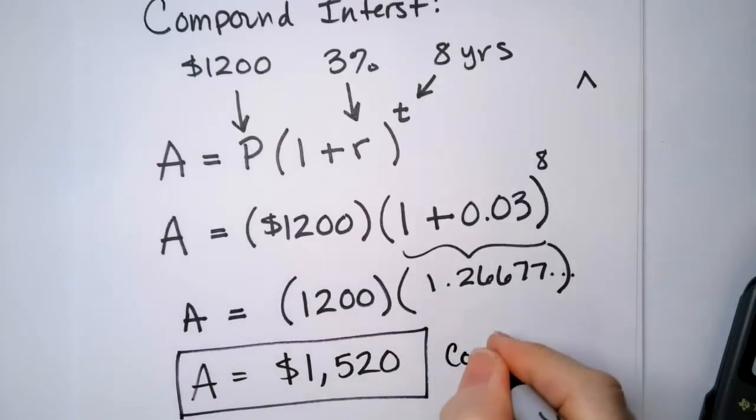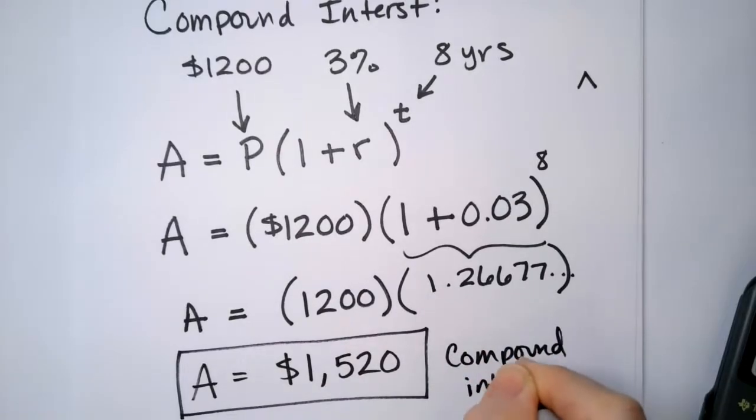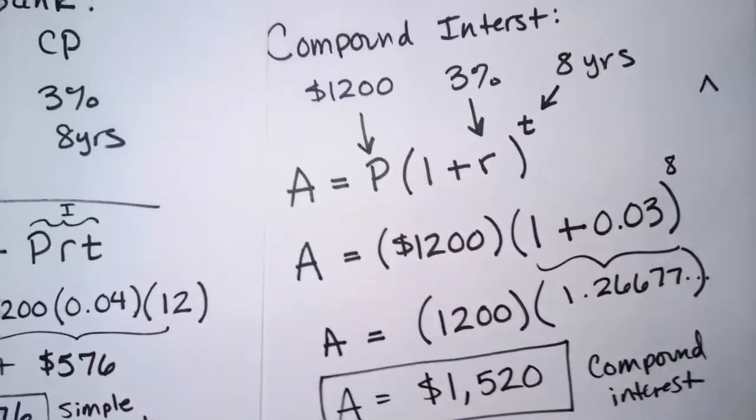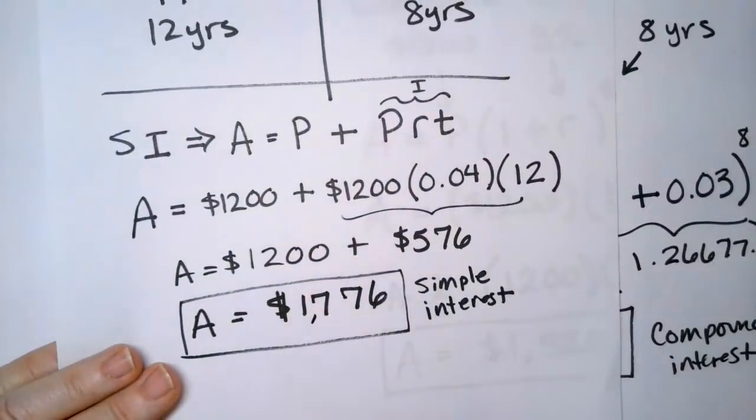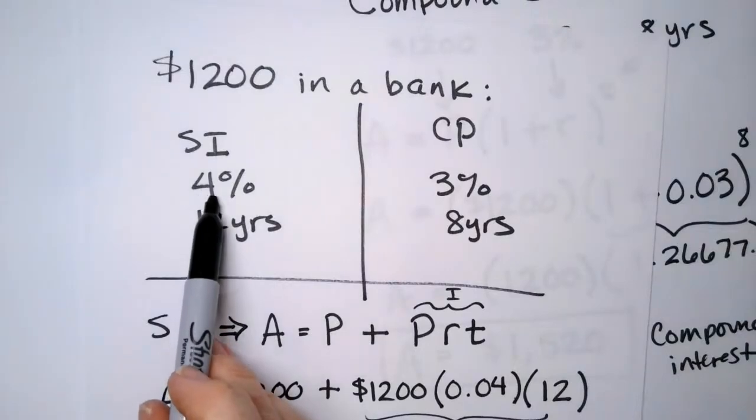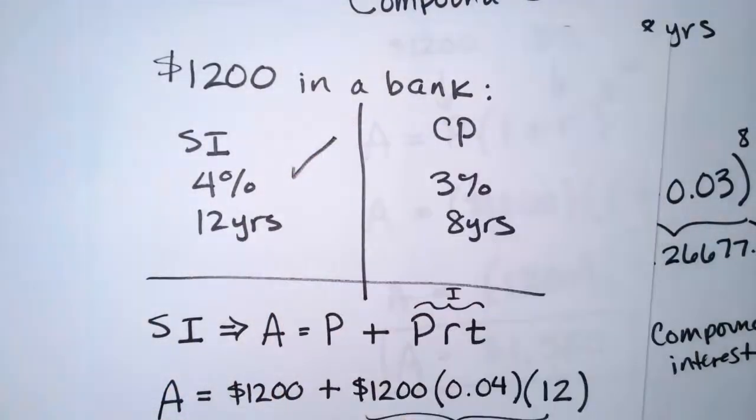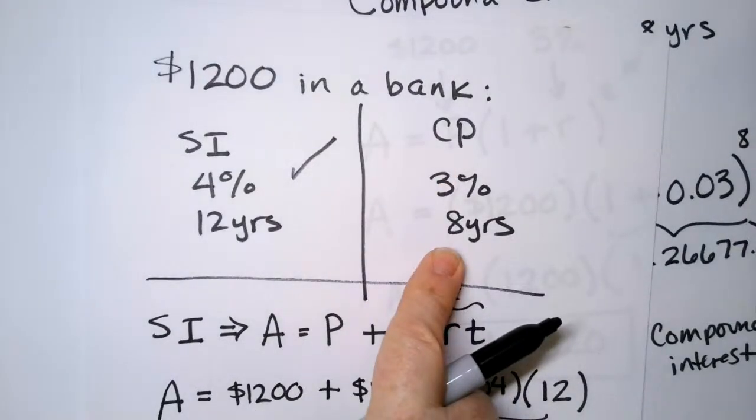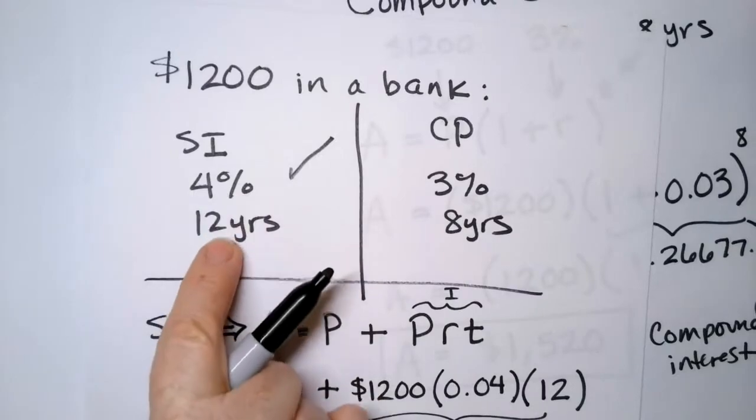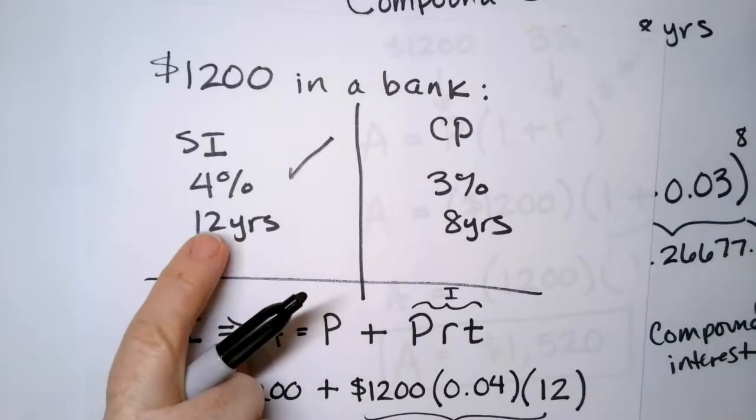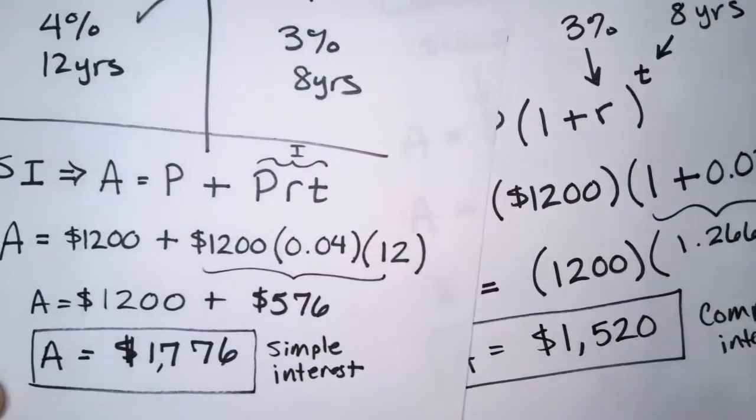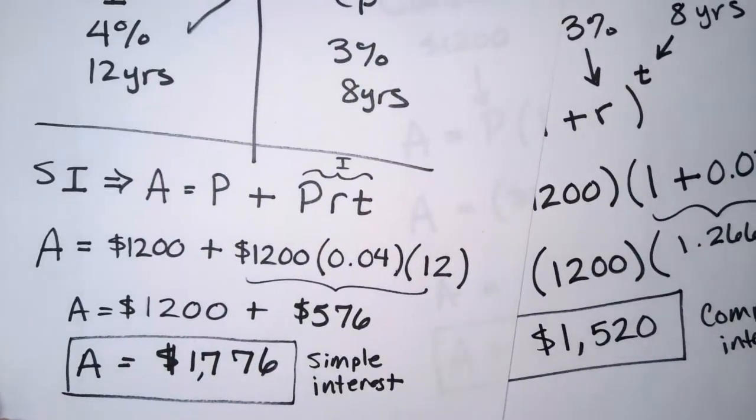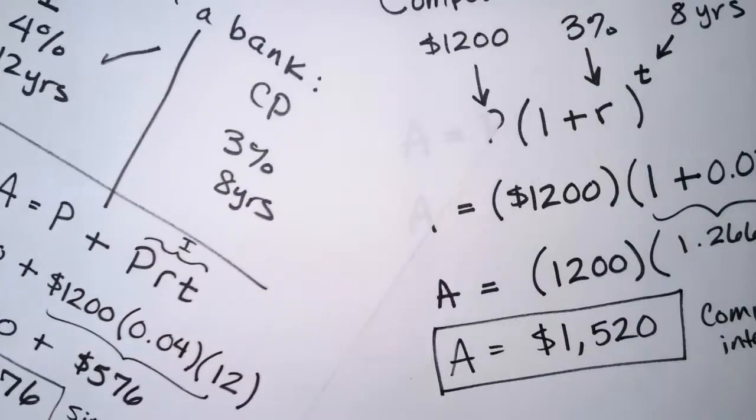So which one is a better deal? So I have $1,520 and I have $1,776. So in this case, for this percent and this amount of time, this one is the better deal. Doesn't mean that compound interest isn't a great deal. It just means for this rate and for that amount of time, simple interest is going to earn you about $250 more. And by doing what? By simply putting it in a different bank account.